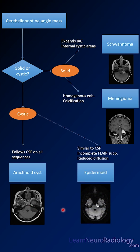If you have a mass that's similar to CSF but maybe doesn't completely suppress on FLAIR, and it's bright on diffusion, that's an epidermoid.